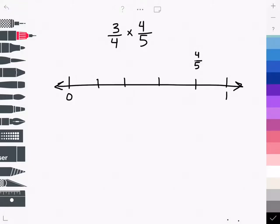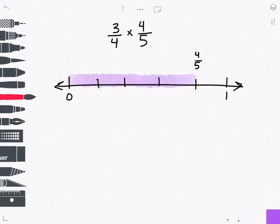So again, I'm looking for 3/4 of 4/5. Now I'm going to find 3/4 of 4/5 by taking this length, 4/5, and splitting it into fourths.